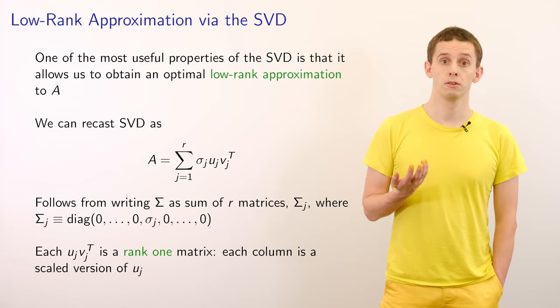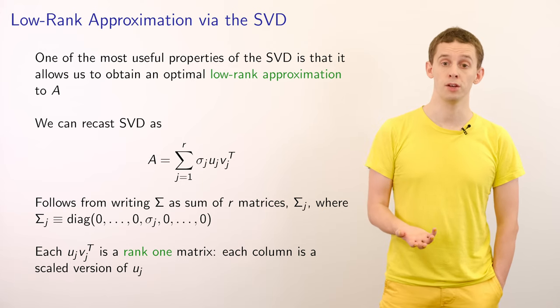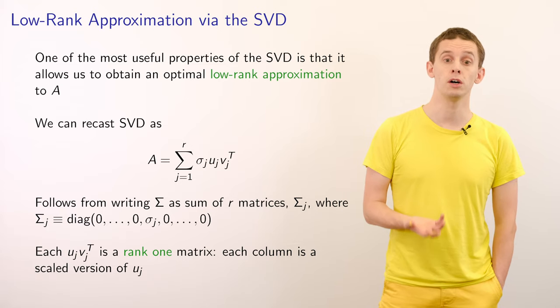If we look at each factor uj times vj transpose, then we'll see that this is a rank 1 matrix. And each column is a scaled version of uj.